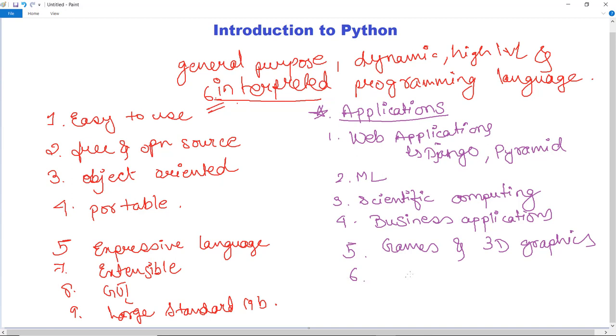The last application is desktop applications. Desktop applications like YouTube, Dropbox, BitTorrent, Bazaar and Cinema 4D are all developed in Python.